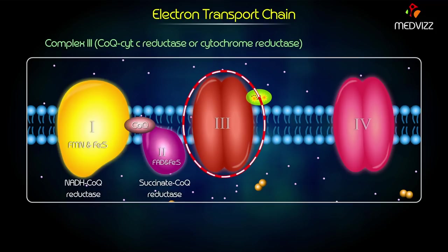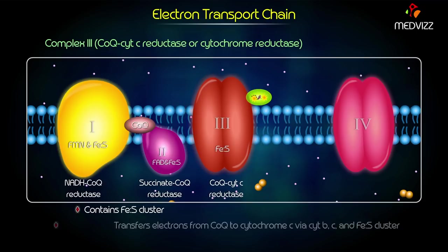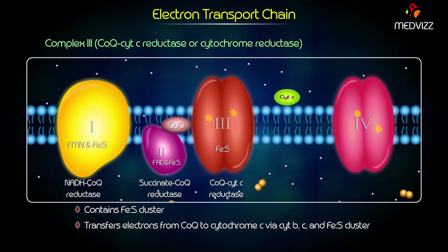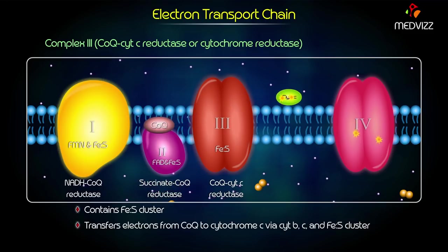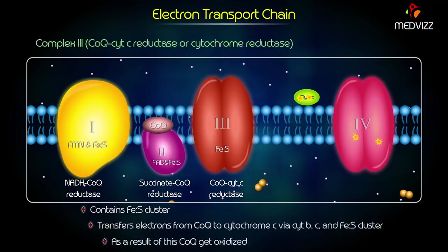Complex 3 is coenzyme Q cytochrome C reductase, or cytochrome reductase. It also contains an iron-sulfur cluster. Complex 3 transfers electrons from coenzyme Q to cytochrome C via cytochrome B, C, and the iron-sulfur cluster. As a result of this, coenzyme Q gets oxidized.